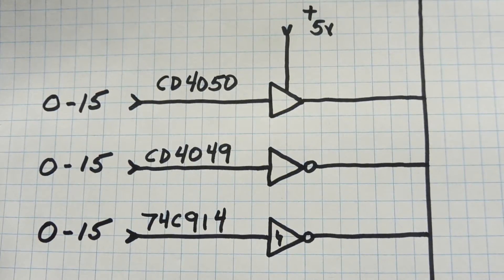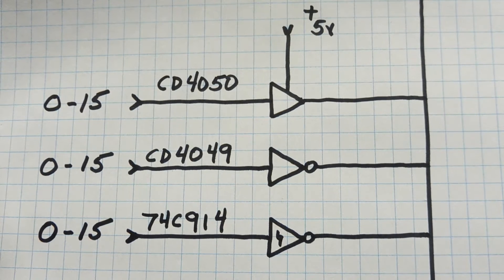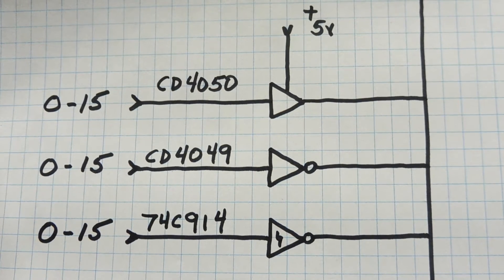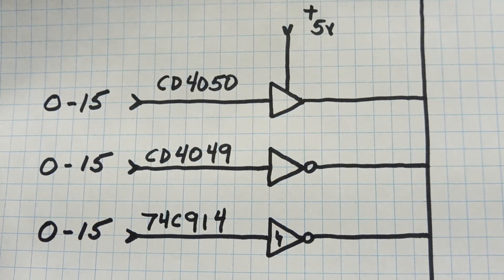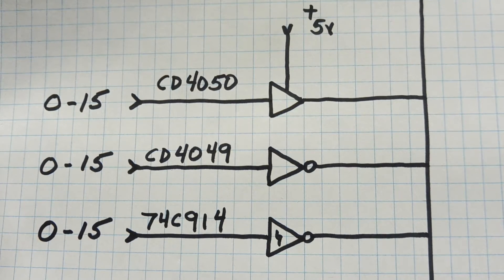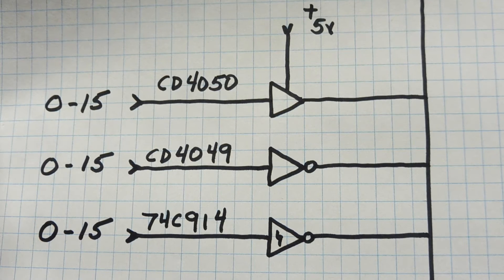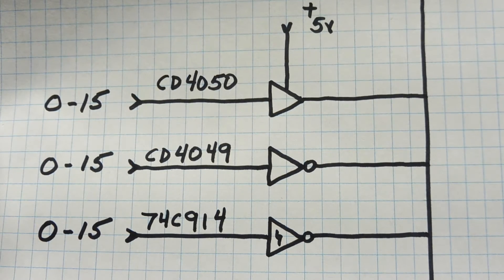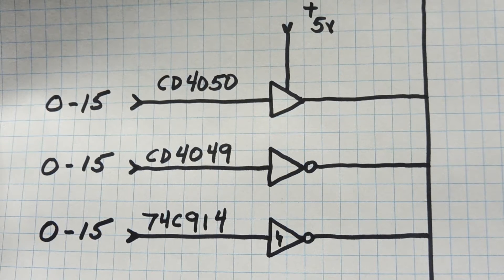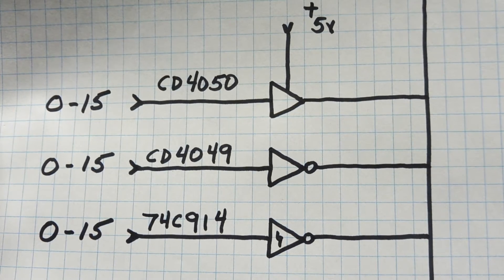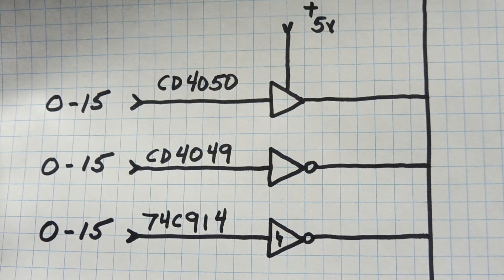Here's another solution to increase the input voltage range of a GPIO. What we see here are three logic gates. These logic gates have special properties. They all have a supply voltage of 5 volts, but they all have an input voltage range of 0 to 15 volts. The first one is a buffer, the CD4050. So 15 volts in will have 5 volts out.